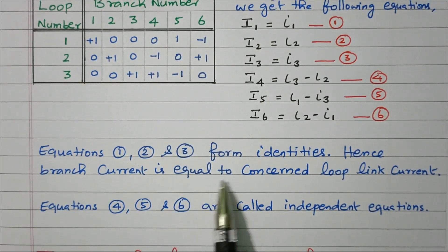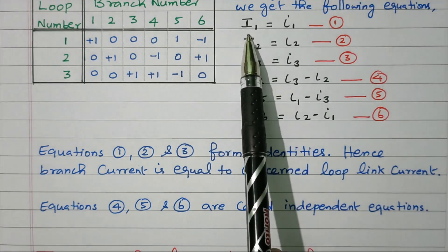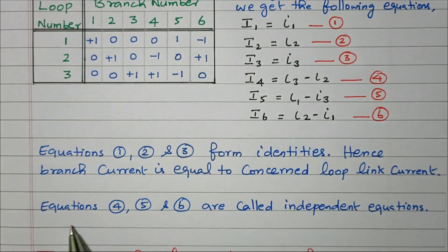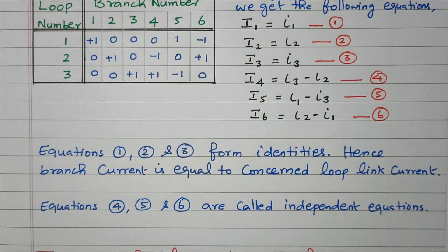The equations are numbered 1 through 6. Equations 1, 2 and 3 form identities — the branch current equals the corresponding loop current. Equations 4, 5 and 6 are called the independent equations. So in this video we discussed the network topology tie set schedule: for the given network, first we drew the oriented graph, then the tree, then tree with link current, then calculated the tie set schedule, and then the relation between link current and branch current.